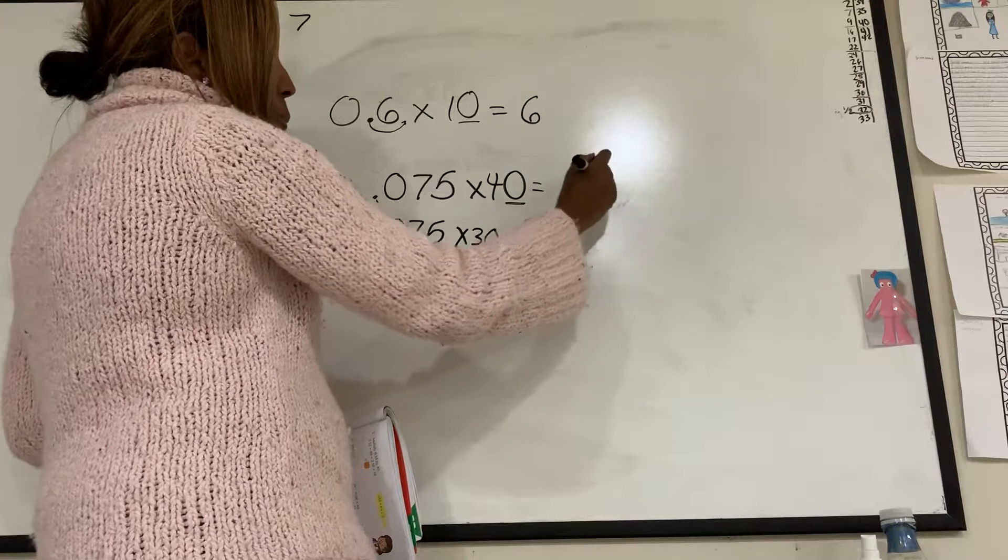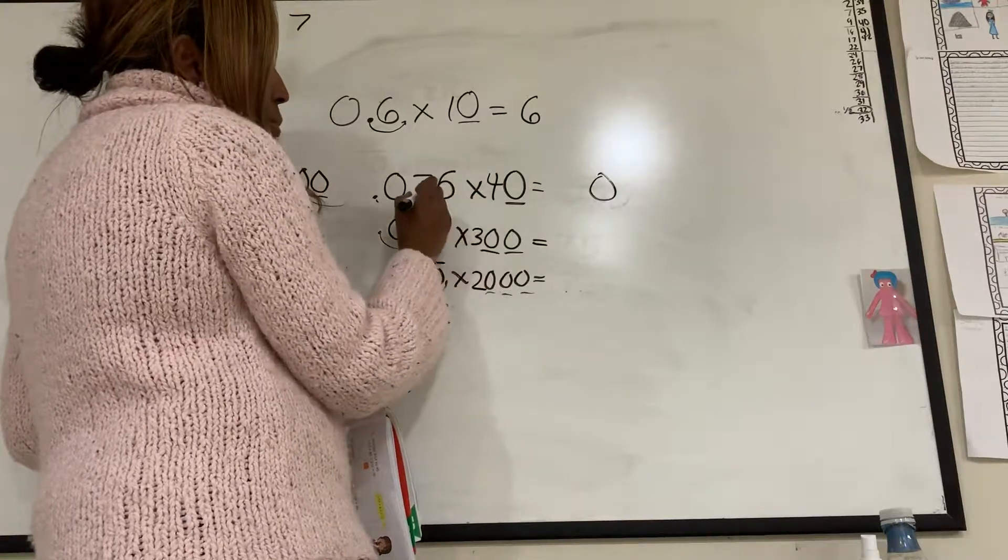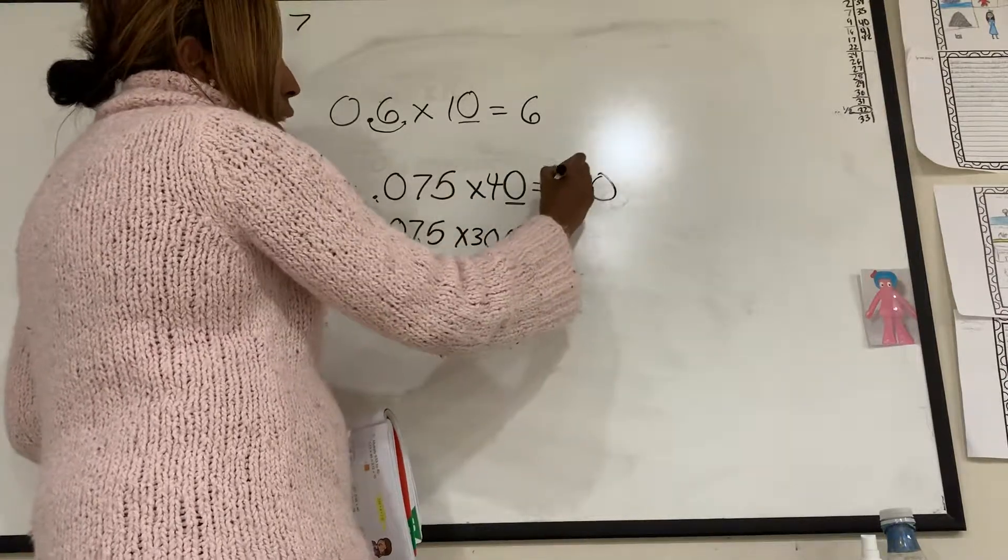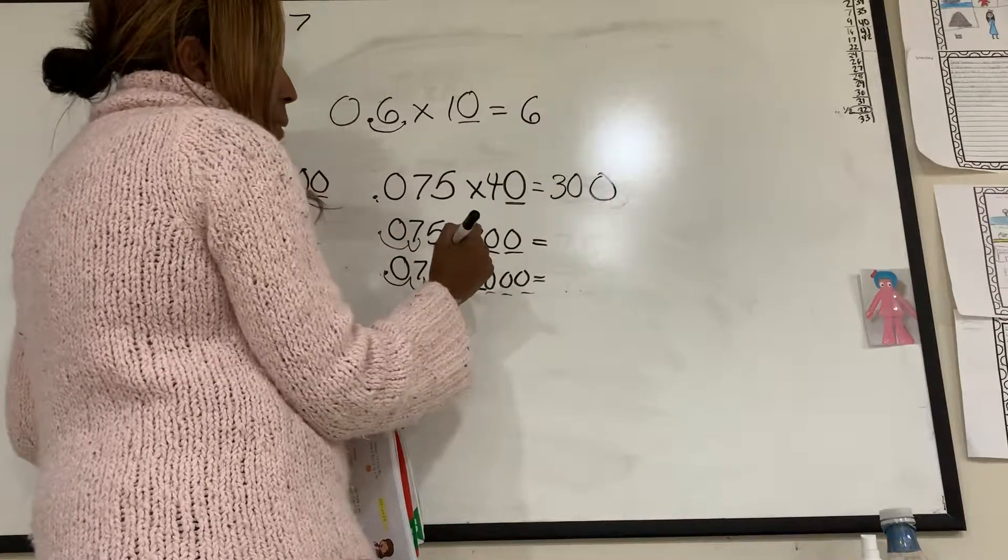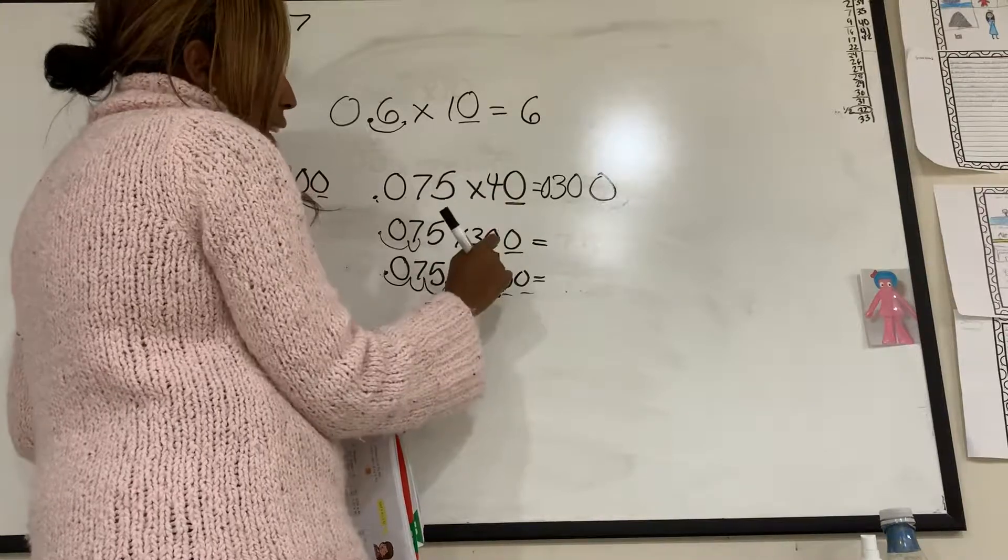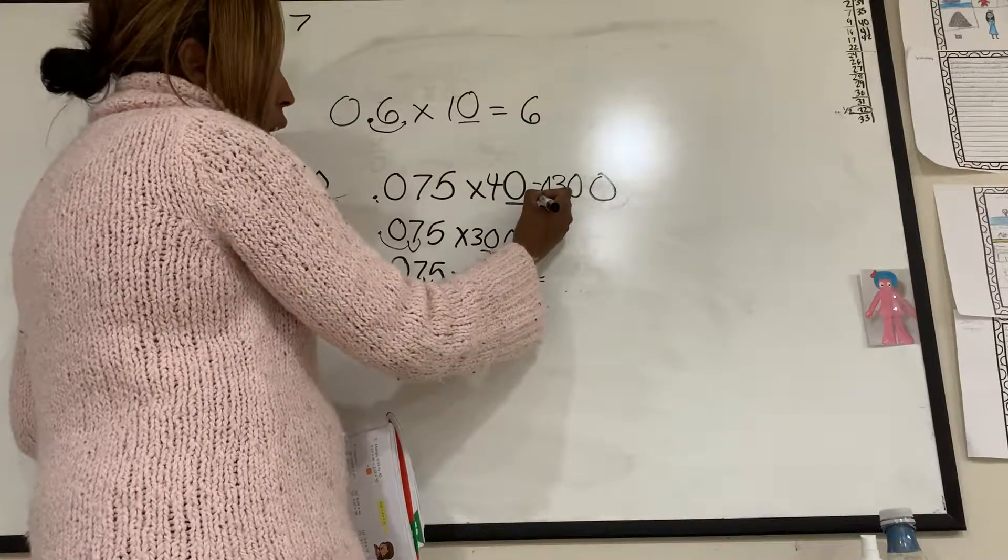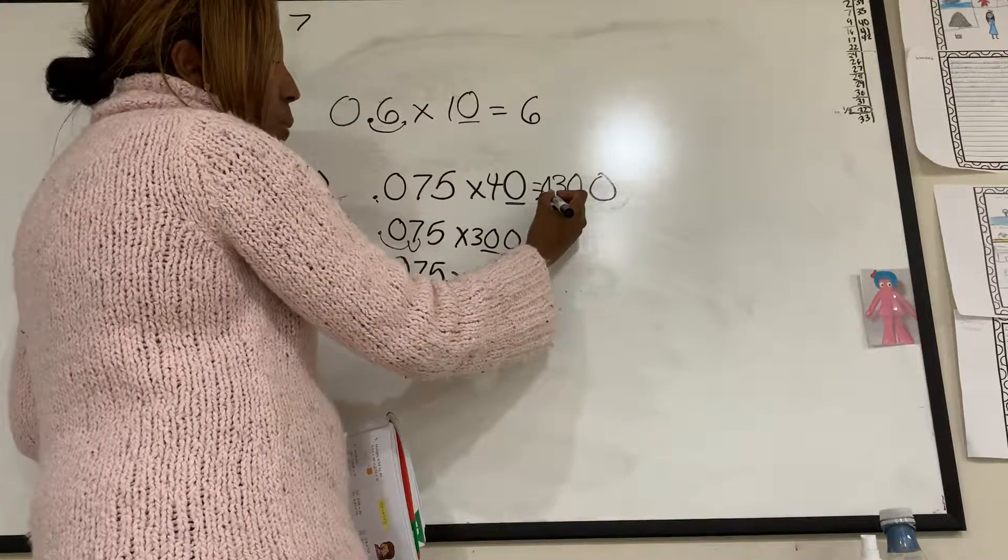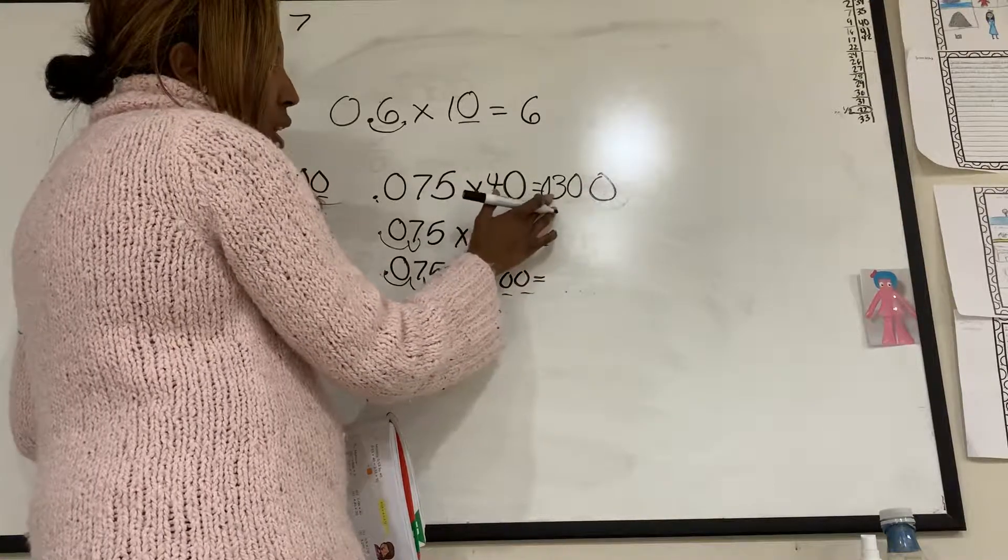So 4 times 5 is 20. Carried a 2. 4 times 7 is 28 plus 2 is 30. And 4 times 0 would be 0. But I had a 0 here for the 10. So I know I'm going to move that one space over for the 0. And that should work.